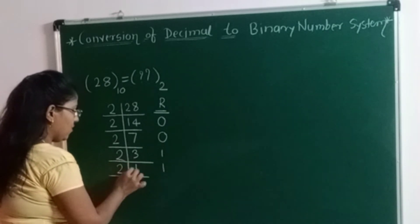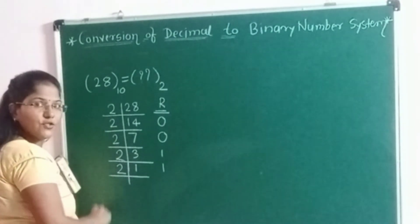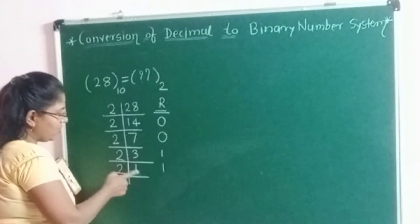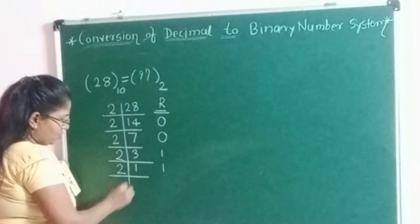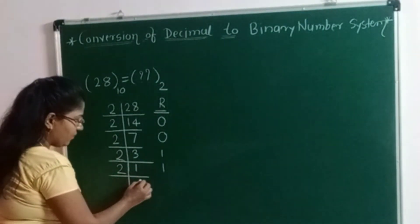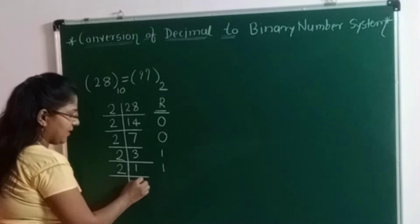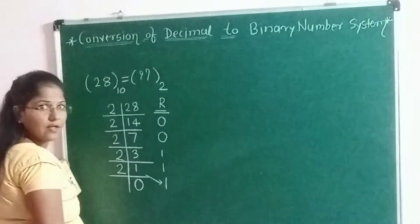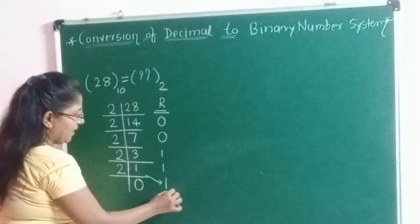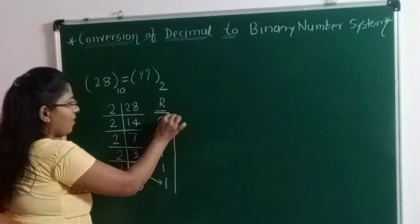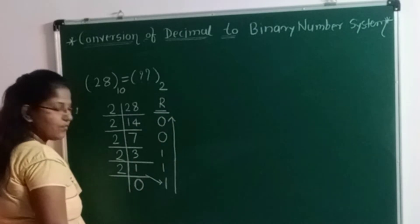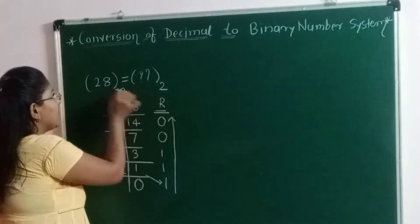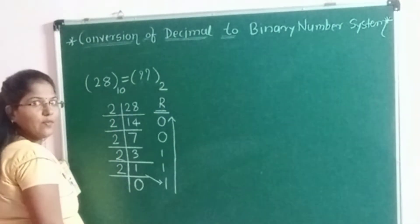Now you can see the quotient is 1 and the divisor is 2. The quotient is smaller than the divisor, so we cannot divide this 1 by 2. When we reach this stage, we have to write the quotient as 0 directly and take this value as the remainder here. Now collect all these remainders from bottom to top — this is the equivalent binary of the given decimal number.